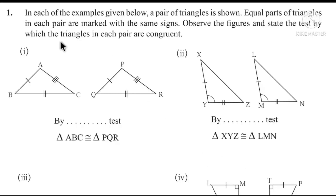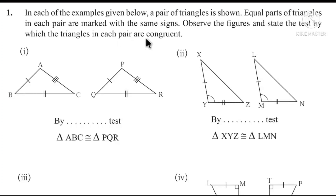In each of the following examples, a pair of triangles is shown. Equal parts of triangles in each pair are marked with the same sign. Observe the figure and state the test by which the triangles in each pair are congruent. We have the same marking for triangle ABC and triangle PQR.